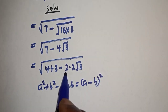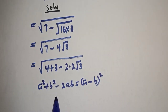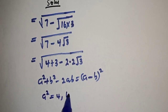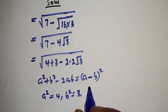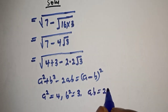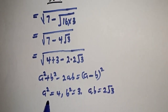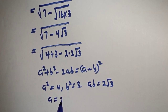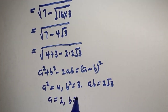We can compare this with this expression. From here, a squared is equal to 4, b squared is equal to 3, and ab is equal to 2 root 3. Therefore, a is equal to 2 and b is equal to root 3.